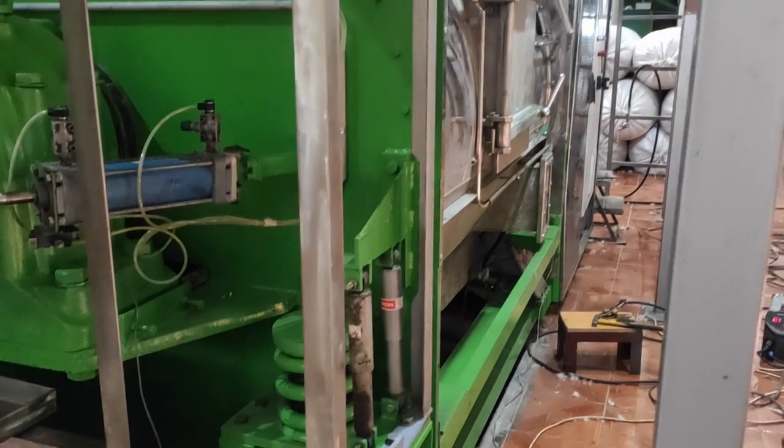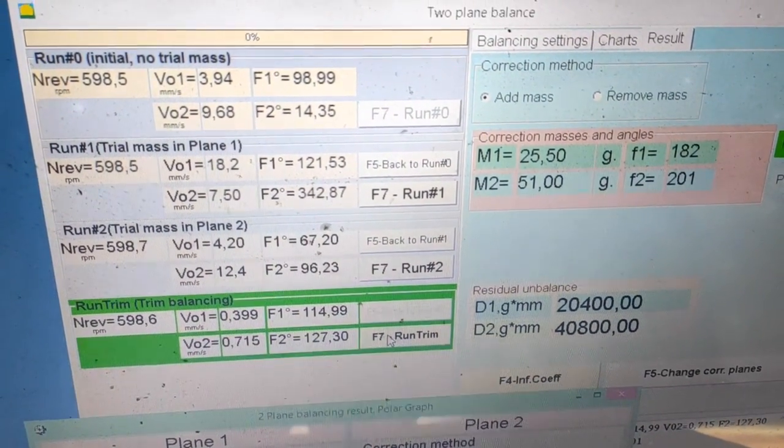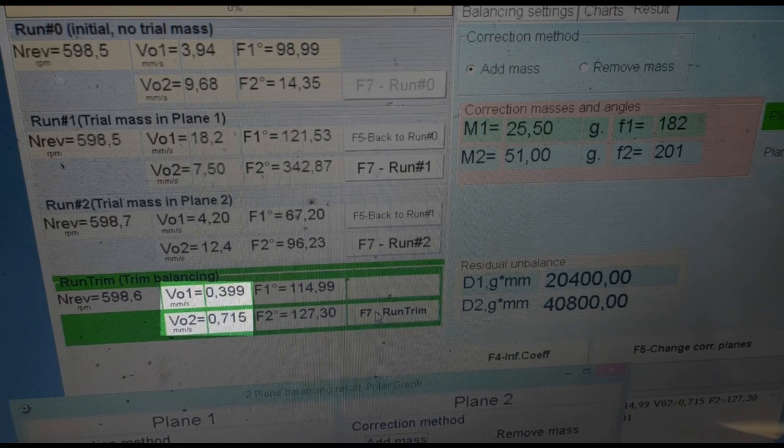After adding correcting weights, vibration level decreased more than 10 times, up to 0.399 mm/second and 0.715 mm/second. The balancing was successful.